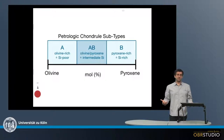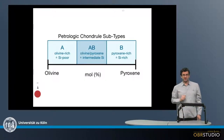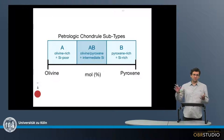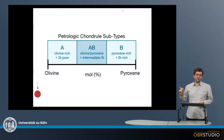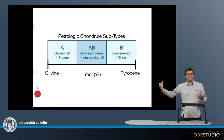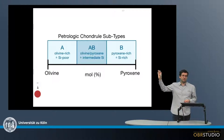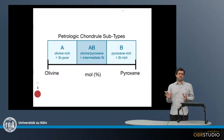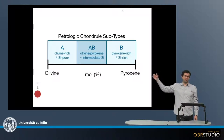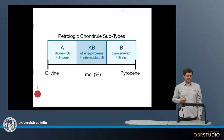Chondrules are further subdivided into a petrologic subtype. This classification is according to their modal abundance, or mole percent, of olivine and pyroxene, which is here on the x-axis. This is a more qualitative scheme, not as quantitative as it might appear — for instance, where A would be up to one-third, AB to two-thirds, and so on.